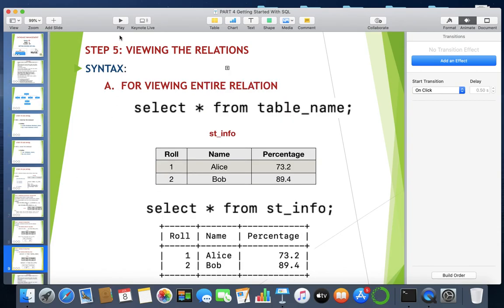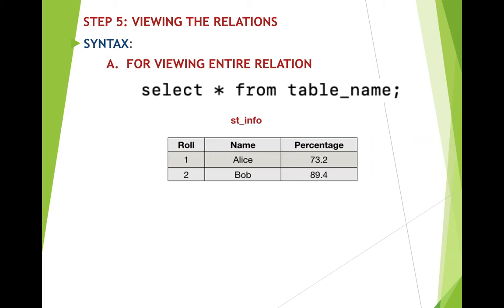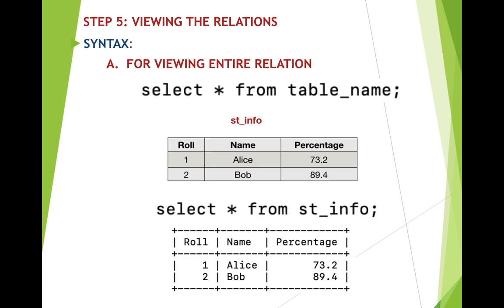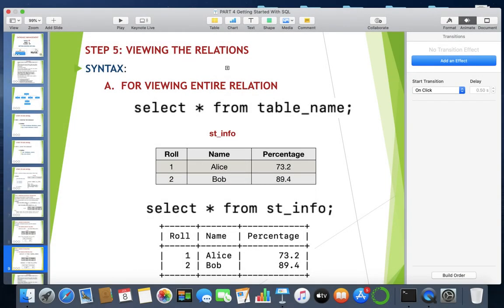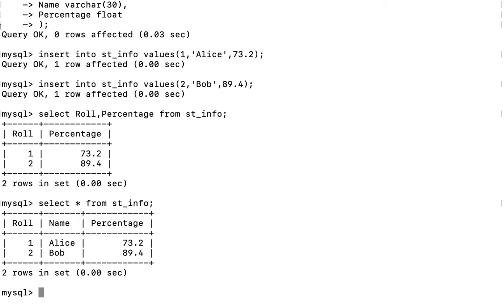Now let us say we require to view the entire relation. For viewing the entire relation, you need not specify any column names. Instead of column names, you replace them with a star (*) — the multiplication symbol. So if I write: SELECT * FROM stinfo (since stinfo is the name of the table), we will get the entire table as the result. Let us do it: SELECT * FROM stinfo gives us the entire table.